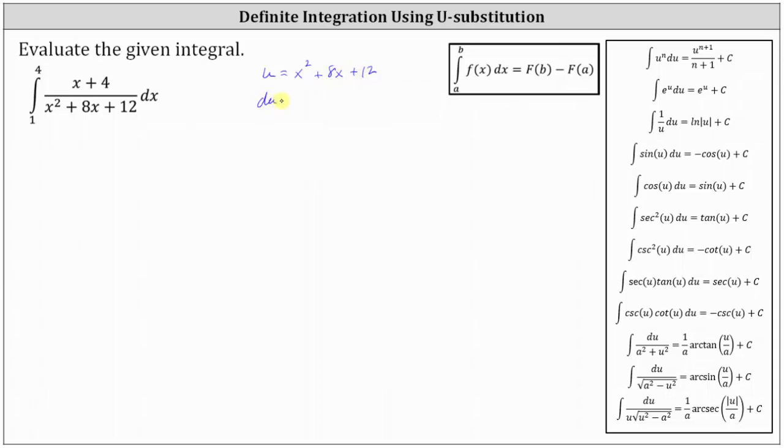And therefore, differential u is equal to the derivative of x squared plus 8x plus 12 times dx, which gives us the quantity 2x plus 8 times dx.